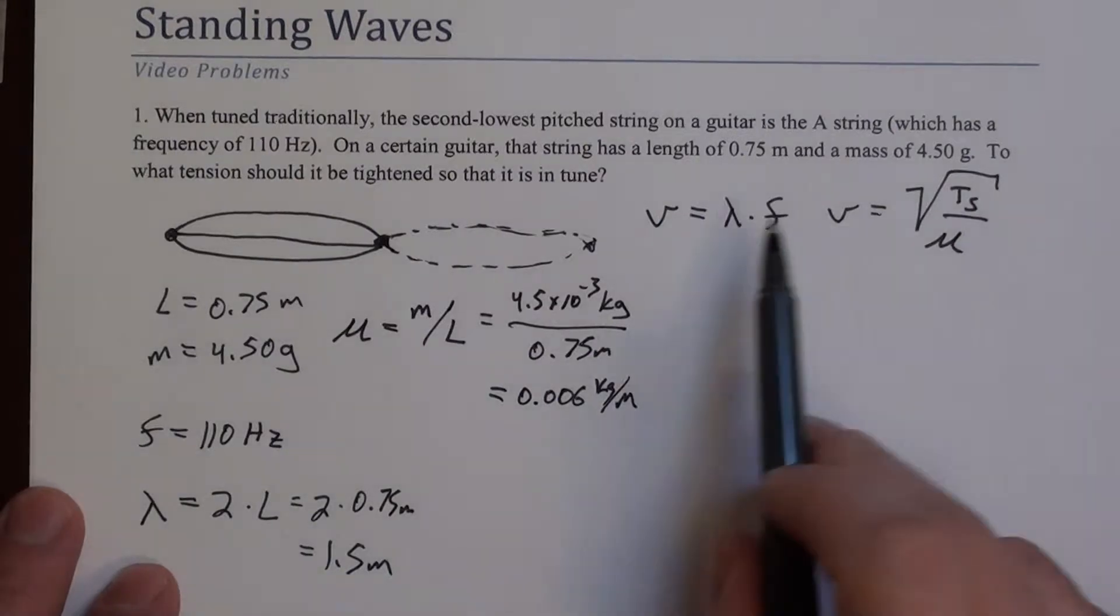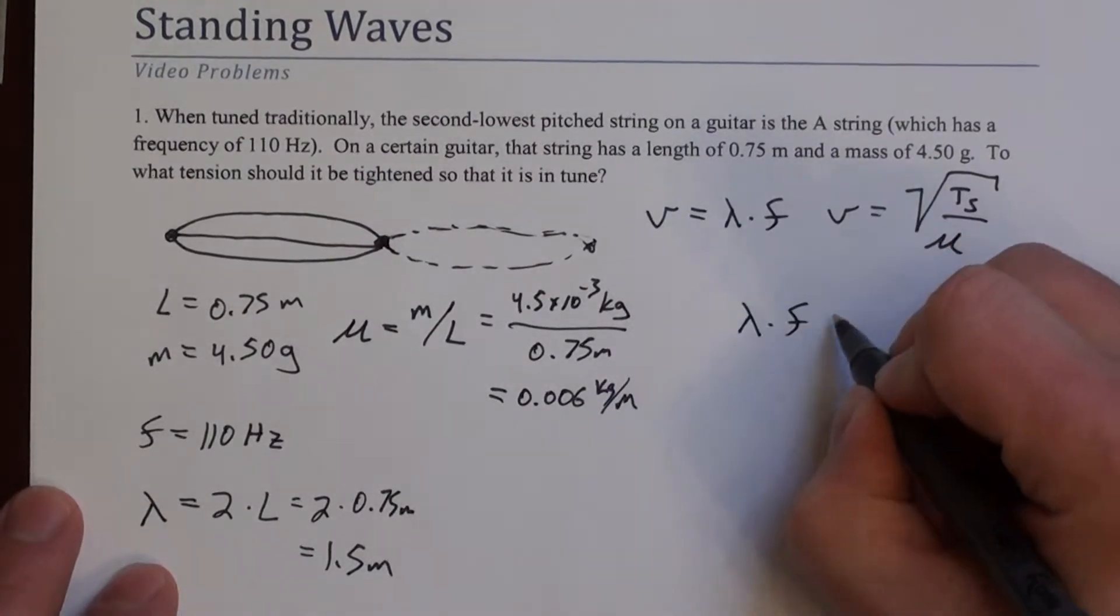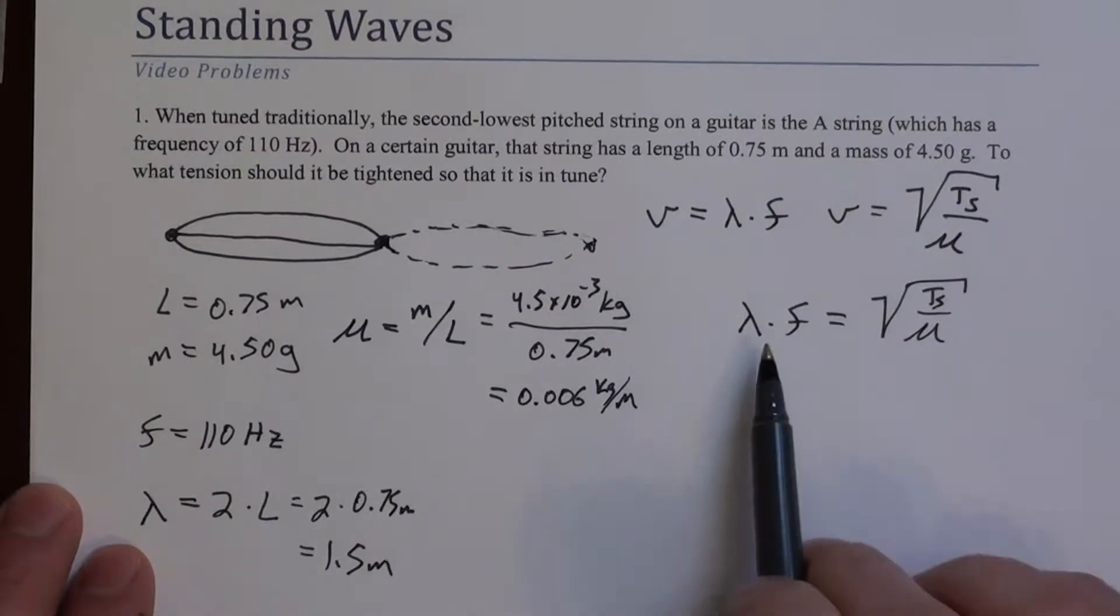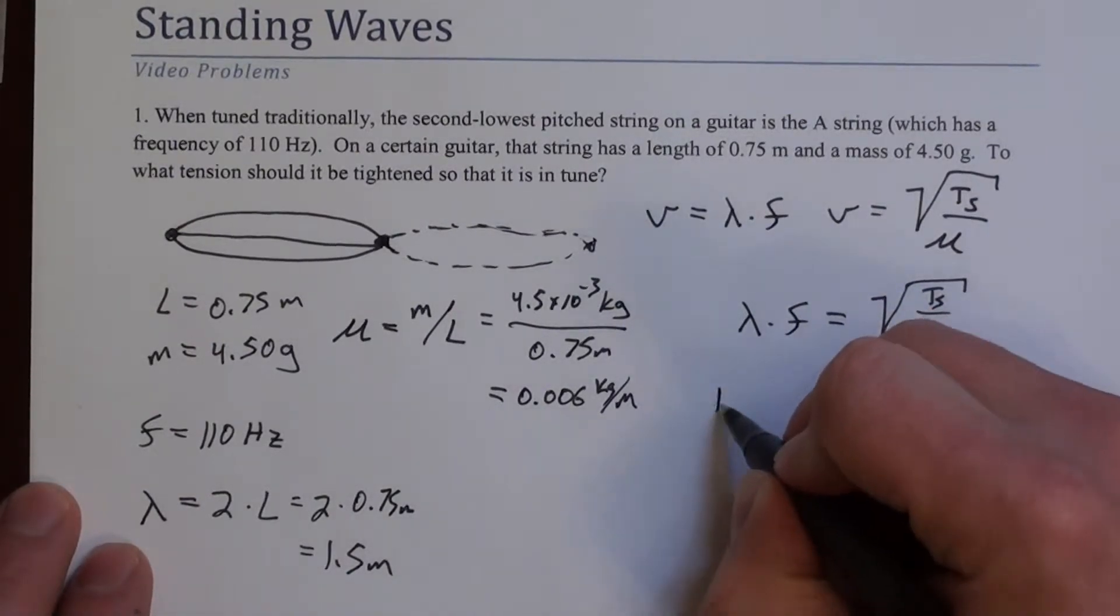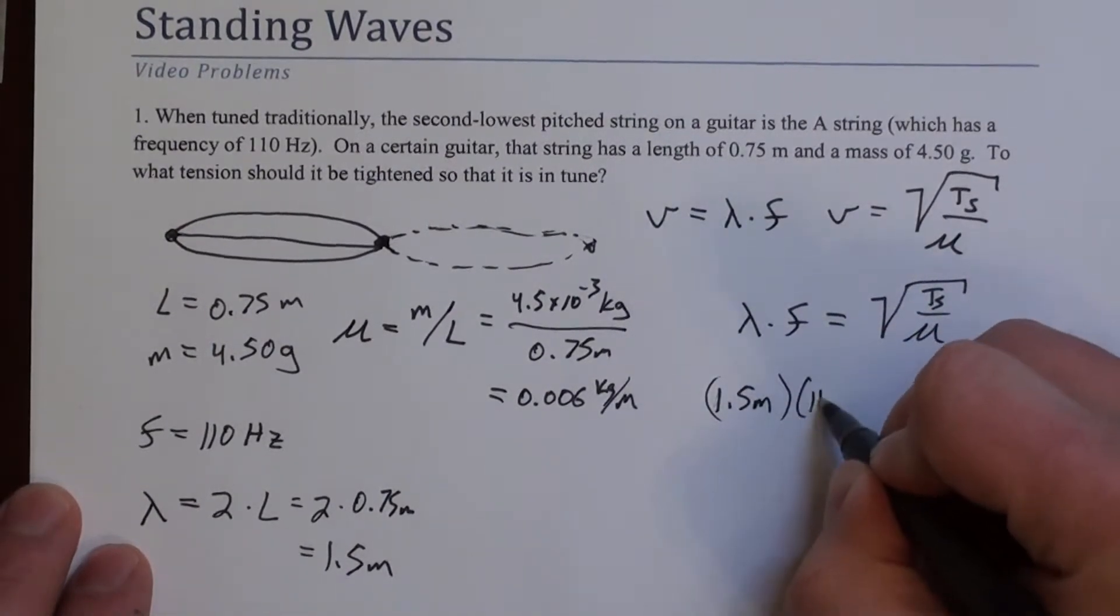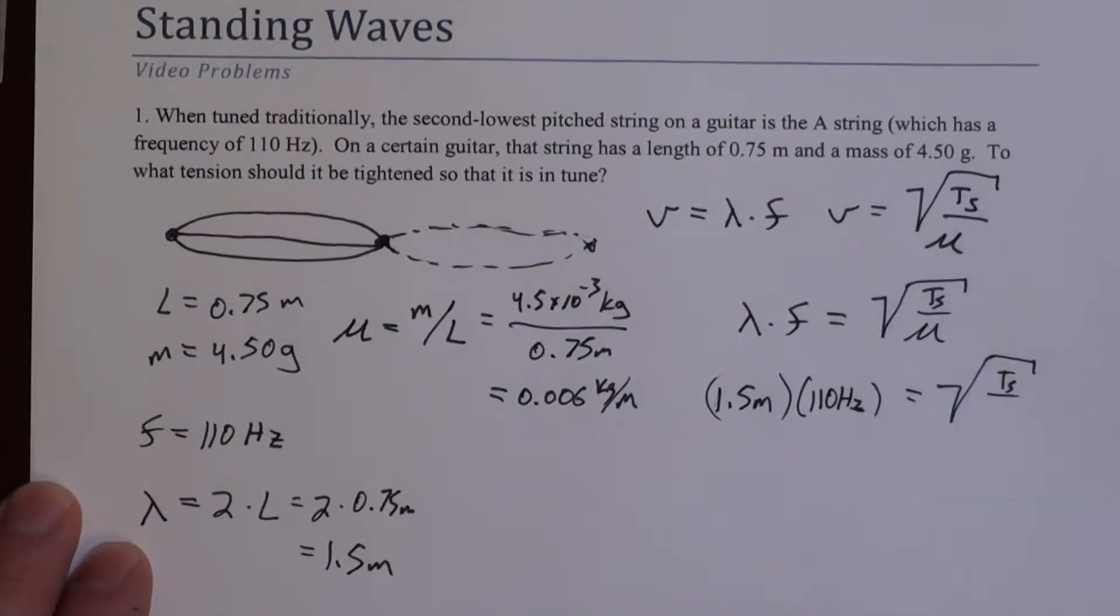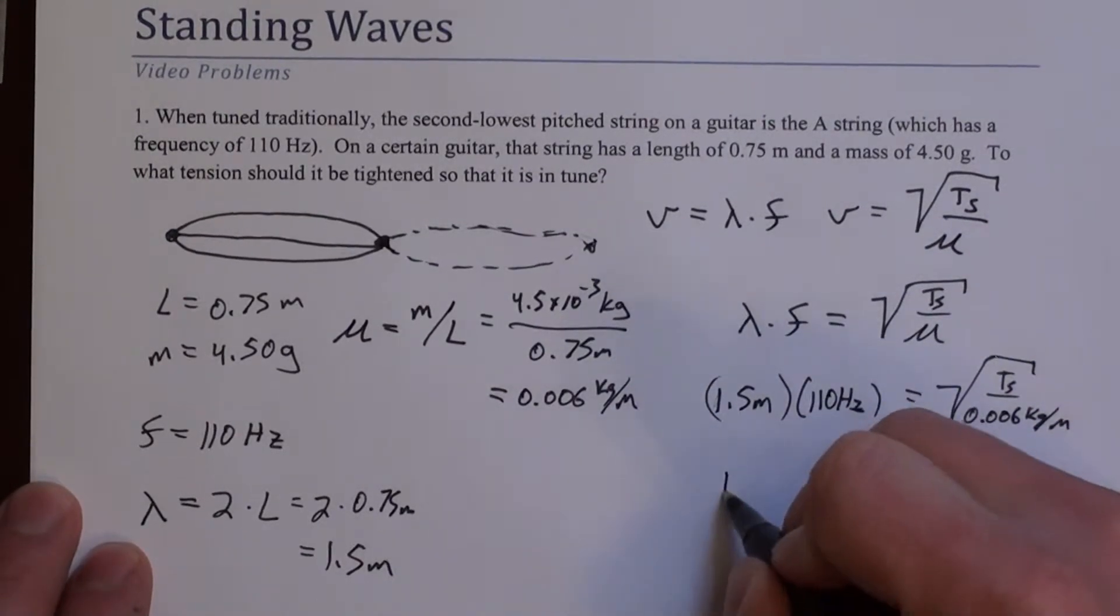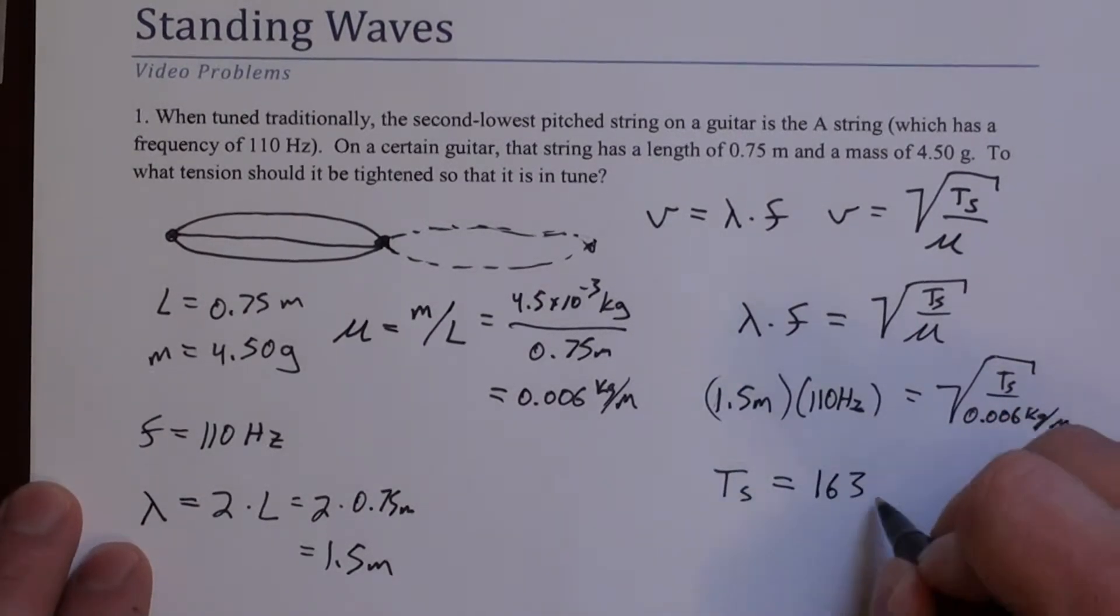So now I can set these two equations equal to each other because they're both equations for the wave speed. So lambda times F equals the square root of the string tension divided by the mass per unit length. Lambda is 1.5 meters, frequency is 110 hertz. This is the square root of the tension divided by 0.006 kilograms per meter. And I can solve this for the tension in the string. What I get is 163 newtons.